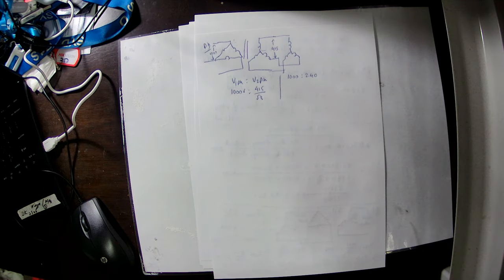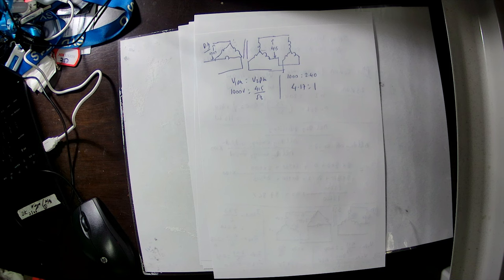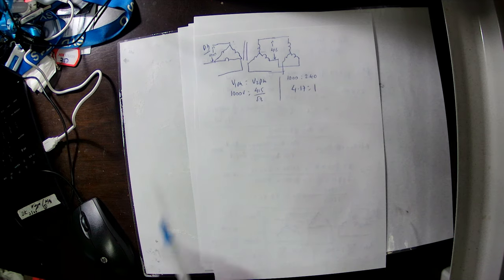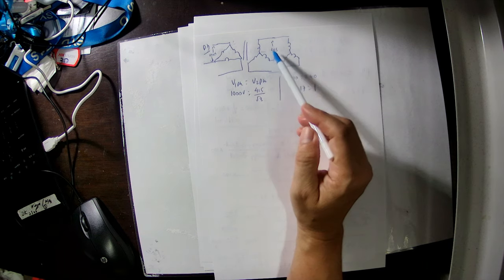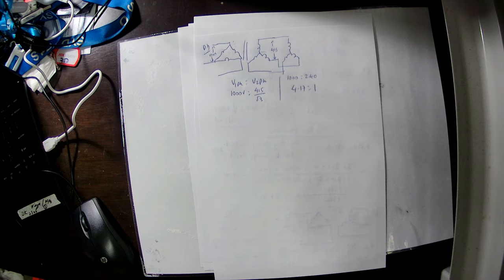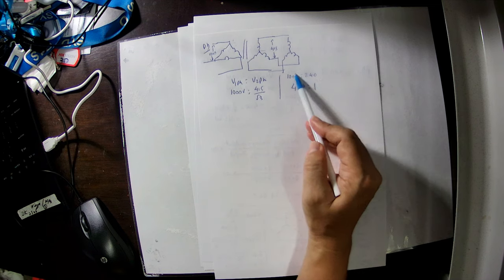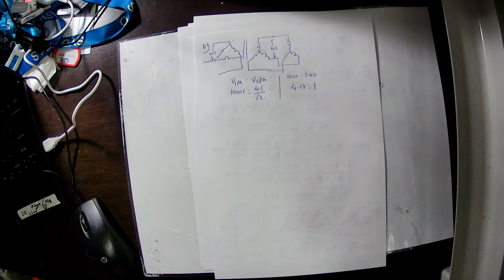Therefore the turns ratio equals 1100 divided by 240, giving 4.17 to 1. When comparing transformer ratios, we must always use phase voltages — V1_phase to V2_phase. For the delta primary, line and phase voltages are equal. For the star secondary, phase voltage equals line voltage divided by root 3. So the ratio is 1100 to 240.